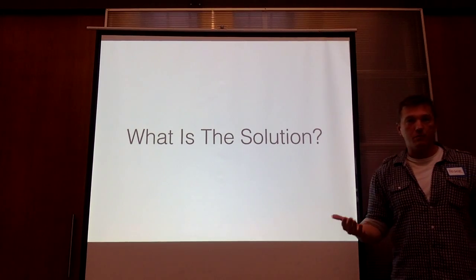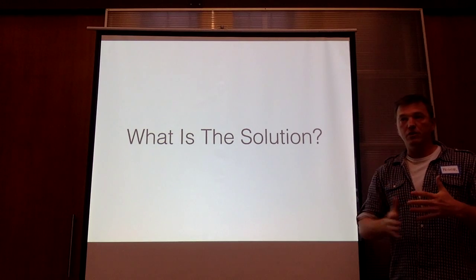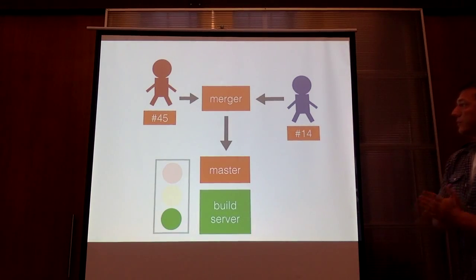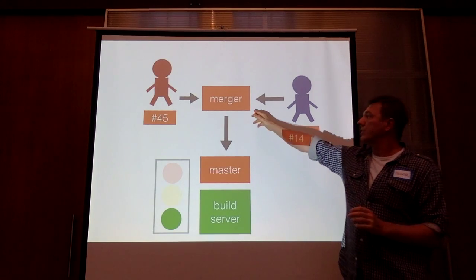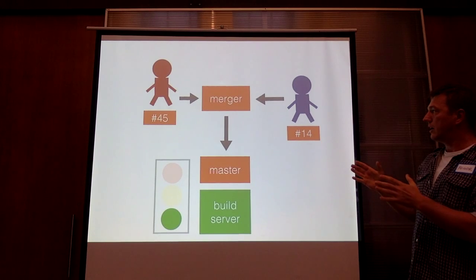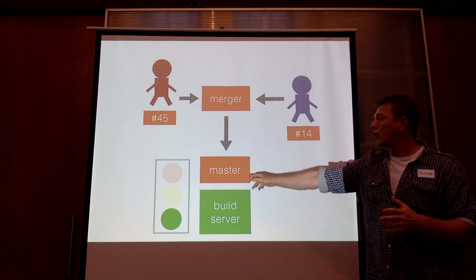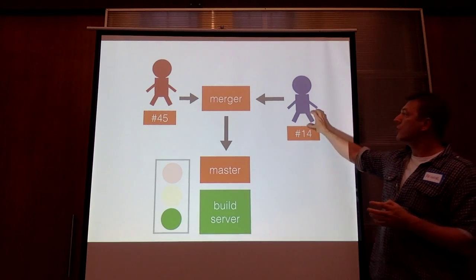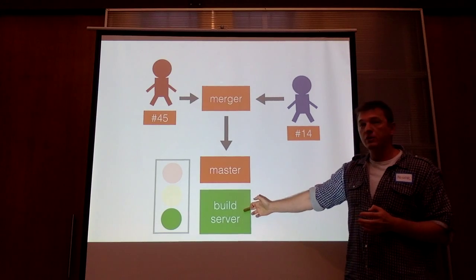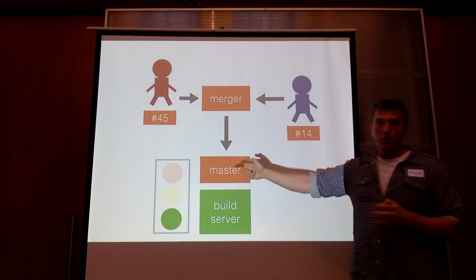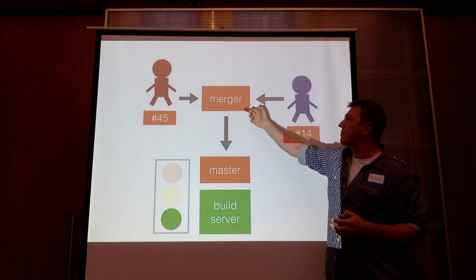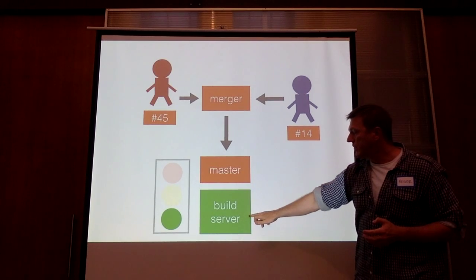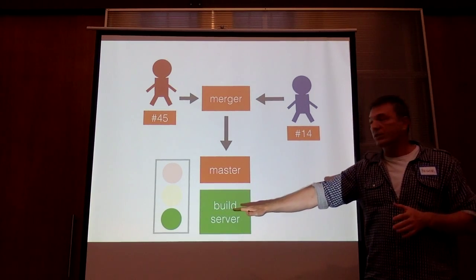So what is the solution? What would I propose? This is my experience over many years working on different projects — commercial, open source. The missing component in this whole picture is what I call the merger. We should prohibit developers from committing their code directly to the master branch. They shouldn't be able to integrate whenever they want. They should give their code to the merger, which does exactly the same thing as the build server, but before merging the code into master. The build server will then show green in 95–99% of cases.